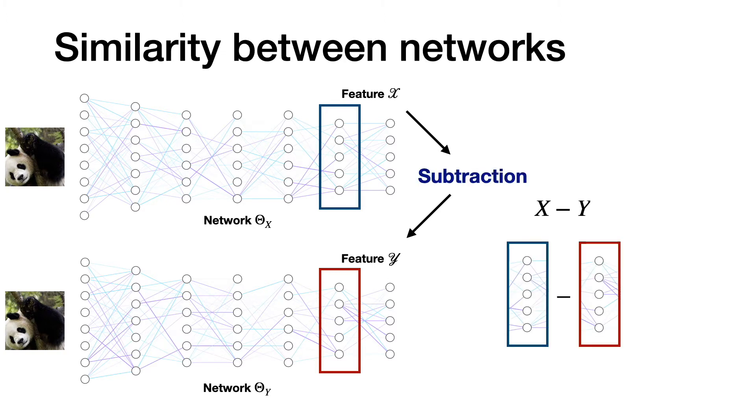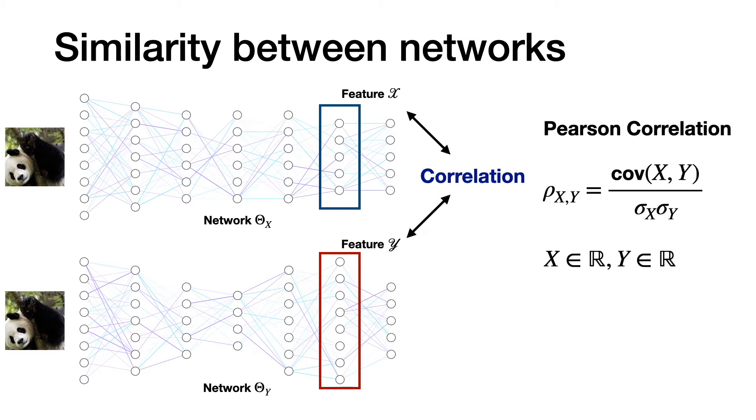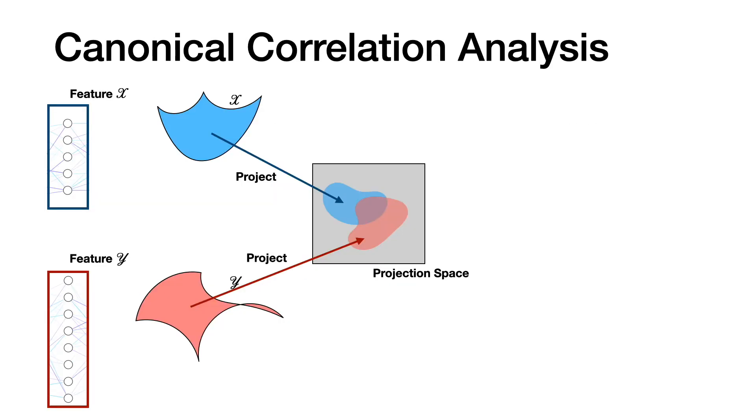To do so, we can simply look at their difference. Okay, but what if we are comparing two different networks and the layers do not have the same dimensionality? In this case, we are interested in capturing their correlation. Of course, for high dimensions, correlation does not work. But there is a well-known tool called CCA that can indeed be used.